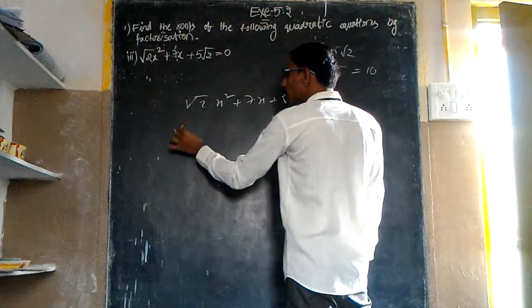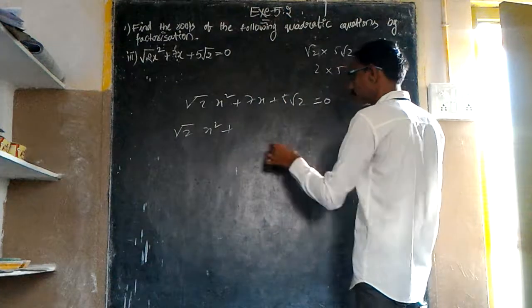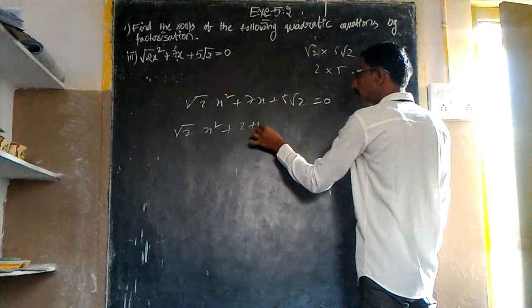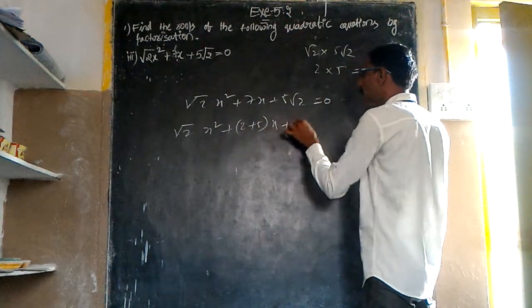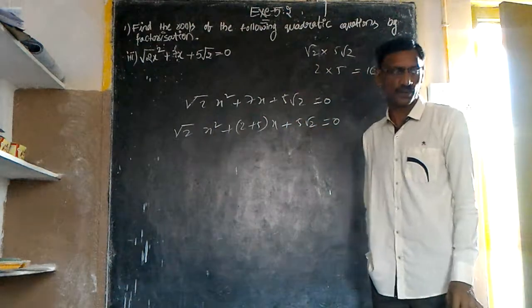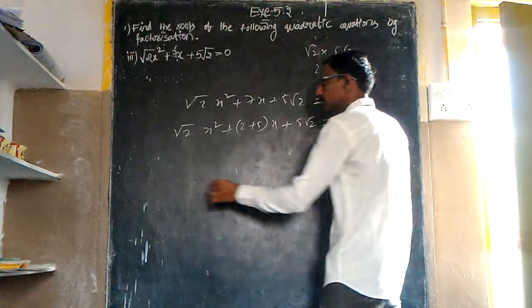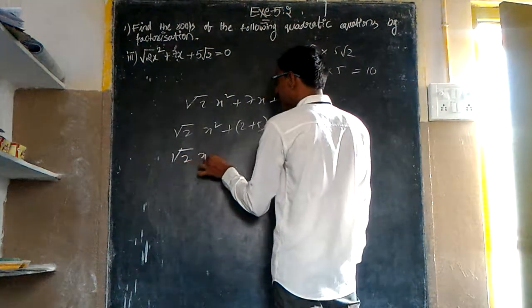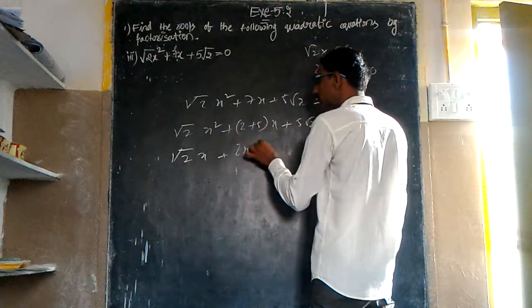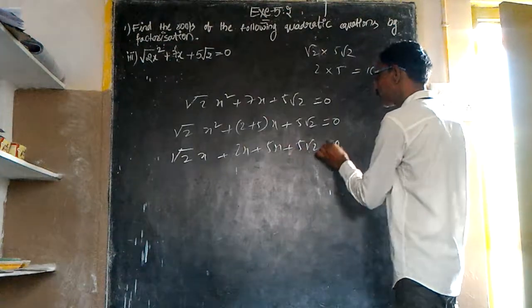So √2x² + 2x + 5x + 5√2 = 0. Here, (√2x + 2)(x + 5√2) = 0.